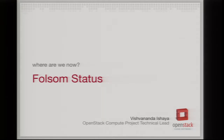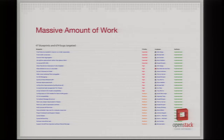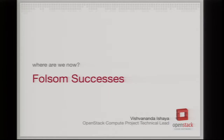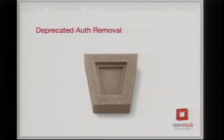I'm going to give you an overview of what we did in the past six months, the current state of things, and then use a bit of precognitive ability to tell you what we'll be working on over the next six months. We did a massive amount of work in the Folsom release: 47 blueprints, 674 bugs — mind-boggling. Some of those we created in the last six months, so thank God we fixed those.